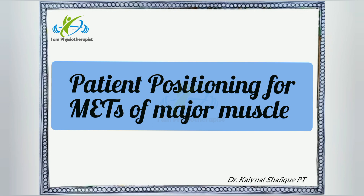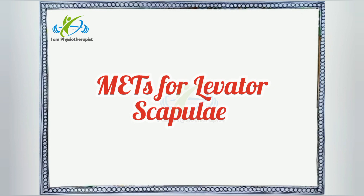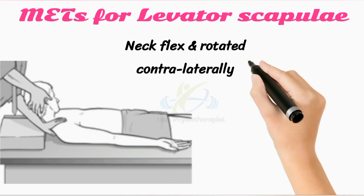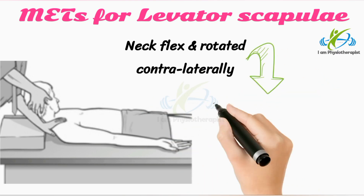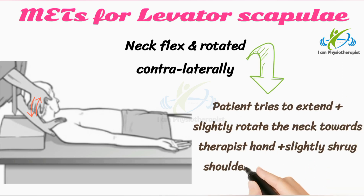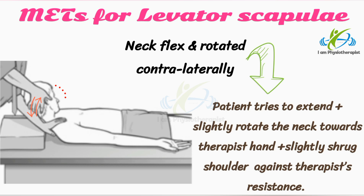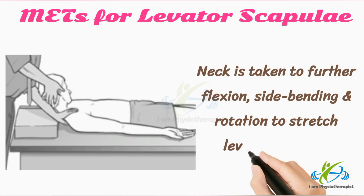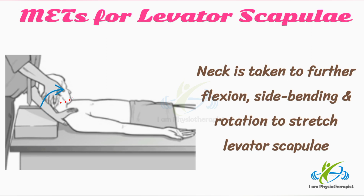Demonstration of patient positioning for METs of various muscles. For the levator scapulae muscle, the patient's neck is first flexed and rotated opposite to the affected side up to the first restriction barrier. The patient is then asked to extend and slightly rotate the head to the affected side, while simultaneously trying to slightly shrug the shoulder against therapist resistance, and hold their breath. After isometric contraction and complete relaxation, the neck is taken to further flexion, side bending, and rotation to stretch the levator scapulae for 10 seconds.